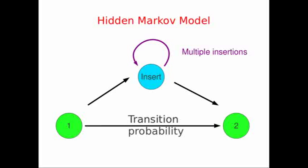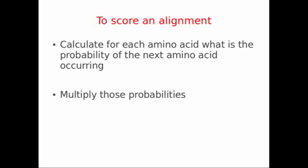We can use that same approach, now that we've got our transition probabilities calculated, to just score an unknown protein as part of our alignment. We just calculate for each amino acid, what's the likelihood of going from that amino acid to the next amino acid, or to a gap. And we can just sum up or multiply those probabilities to get our overall score.